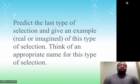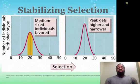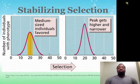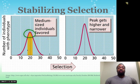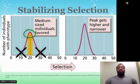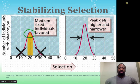So what do you think is the last type of selection? You've probably inferred that the intermediate or medium-sized organisms are now favored. This is what we call stabilizing selection — the intermediates are favored while the extremes are at a disadvantage. As a result, the curve gets narrower and higher because the intermediate phenotypes are surviving at a greater rate than the extremes.